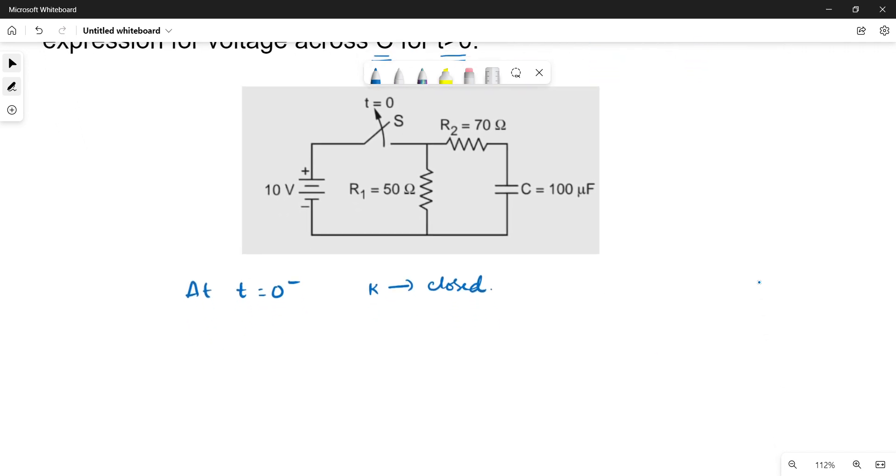So, in the closed condition, we redraw the network. Here is the 10 volt source, 50 ohms, 70 ohms resistor, and the capacitor which is 100 microfarad.